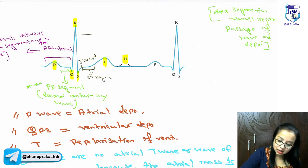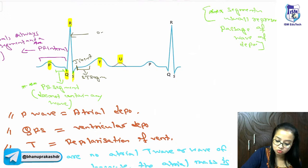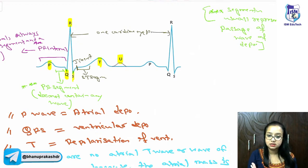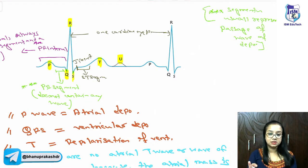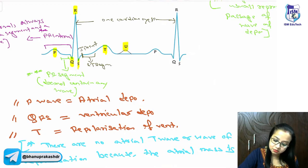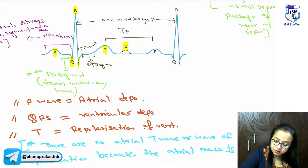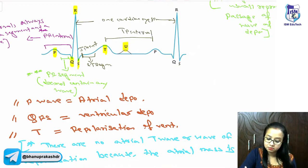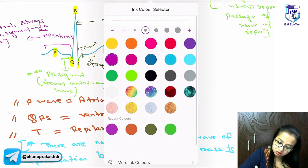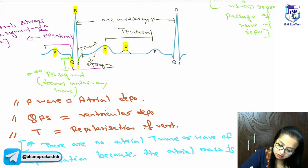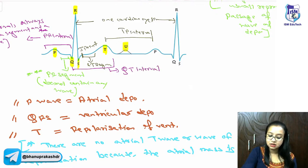The gap between two R waves represents one cardiac cycle. R waves are used because their height makes them easy to identify on the ECG. Other intervals include the TP interval and the QT interval.